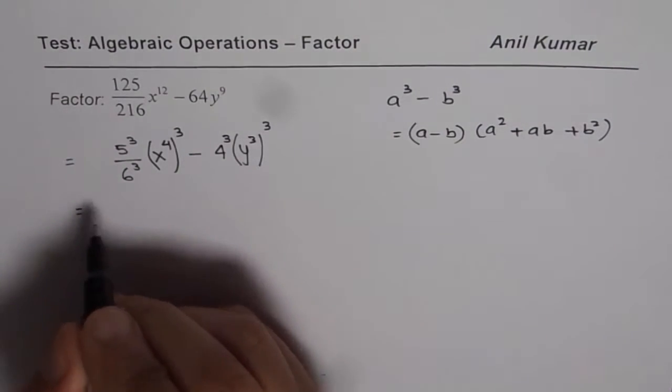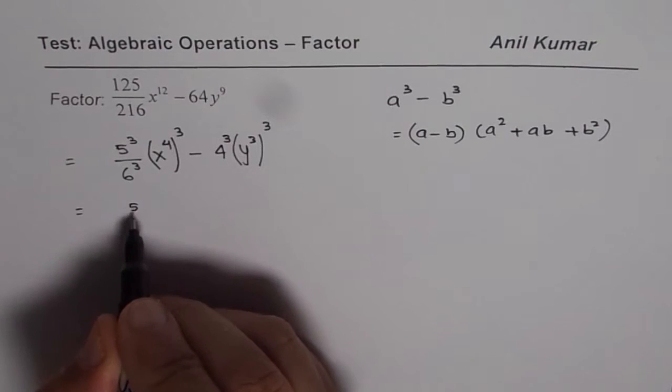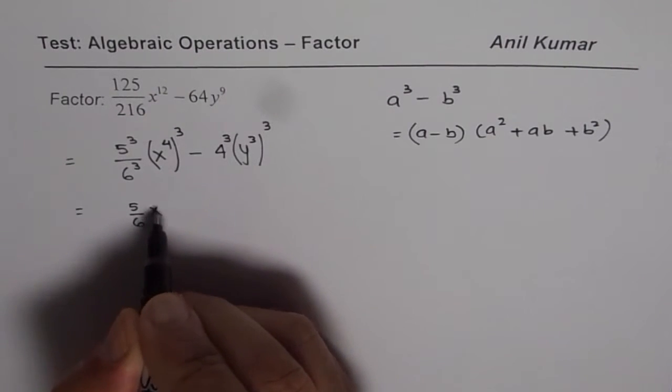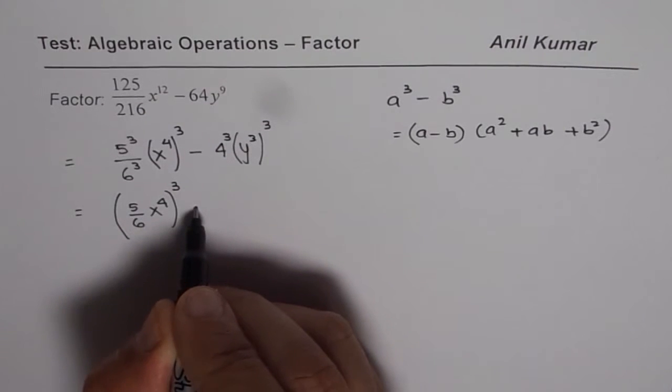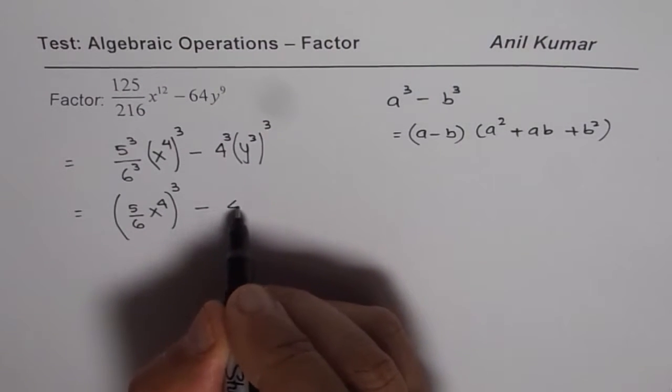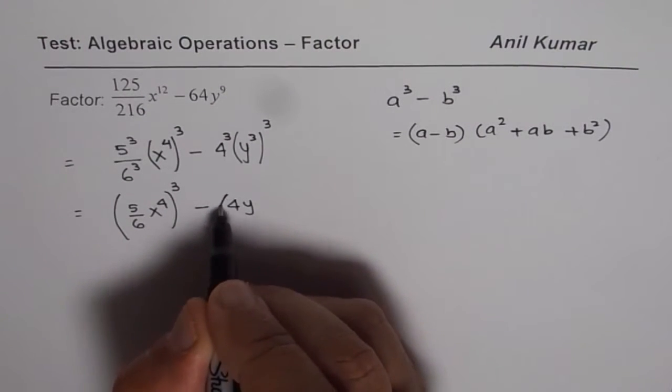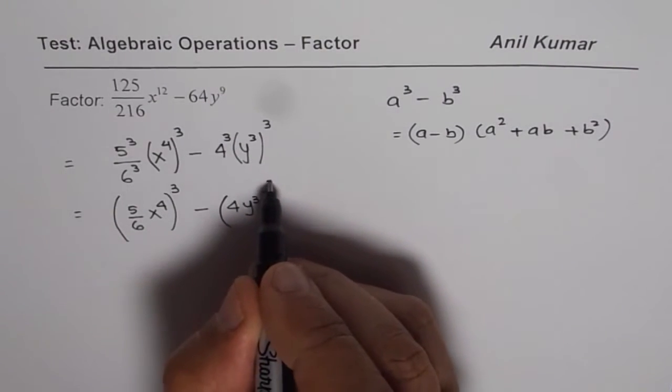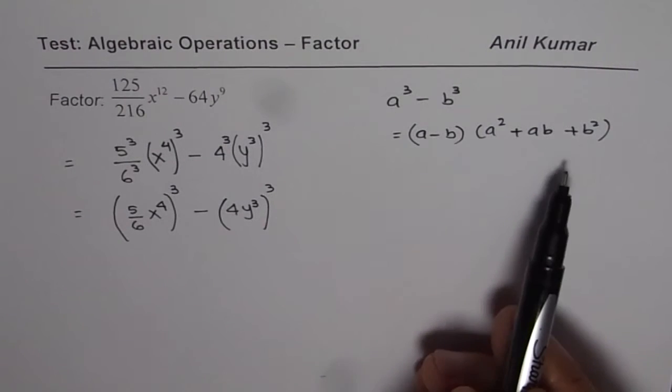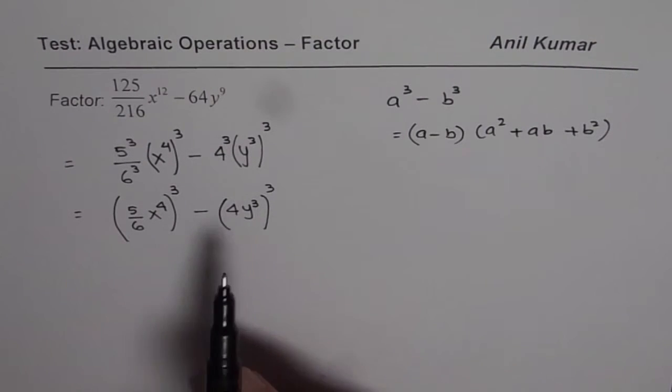This expression now can be written as 5 over 6 x to the power of 4, everything has a cube, minus 4y cube whole cube. Now we can apply difference of cubes and factor the expression.